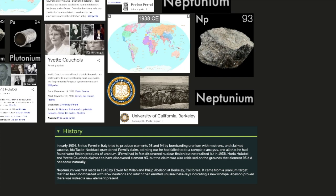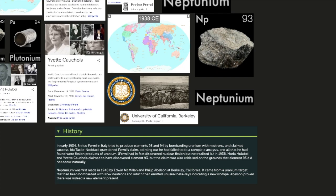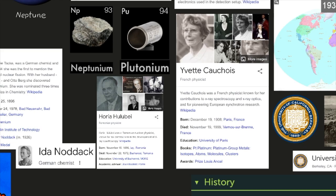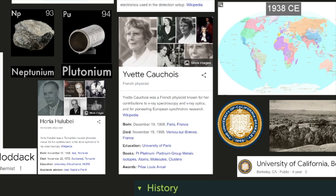In 1938, Horia Hulubei and Yvette Cauchois claimed to have discovered element 93, but the claim was also criticized on the grounds that element 93 did not occur naturally. Horia Hulubei was a Romanian nuclear physicist known for his contributions to the development of X-ray spectroscopy. Yvette Cauchois was a French physicist known for his contributions to X-ray spectroscopy and X-ray optics, and for pioneering European synchrotron research, according to Wikipedia.